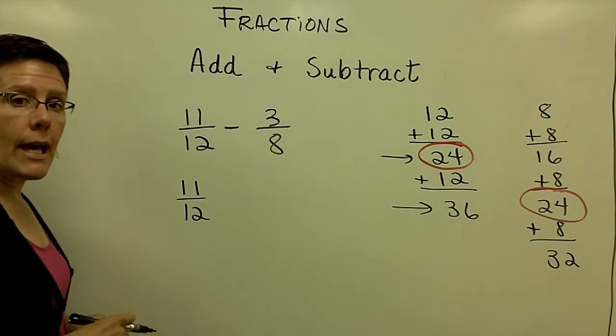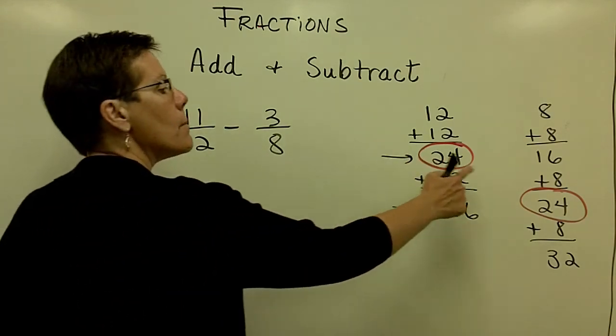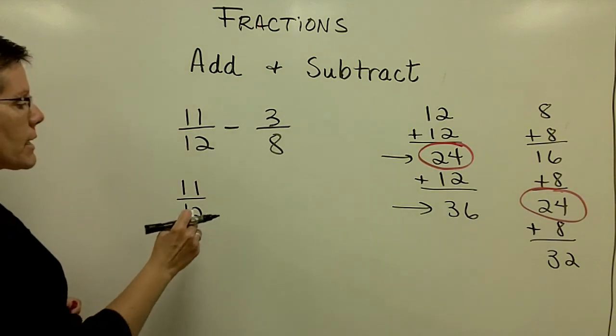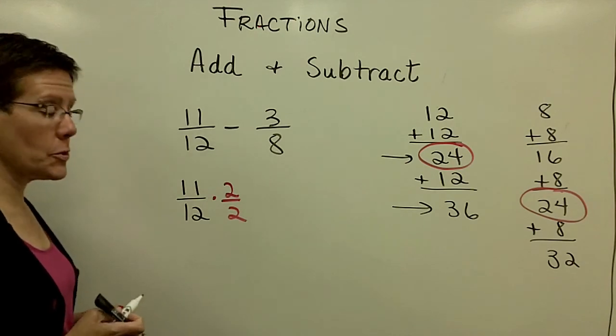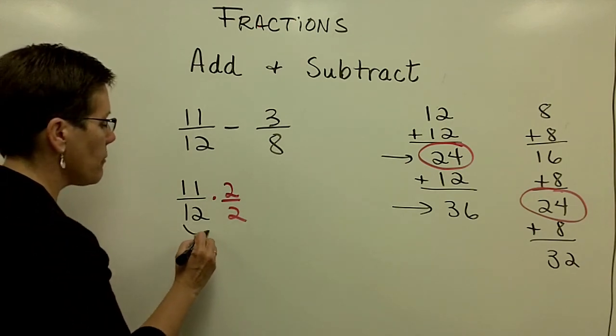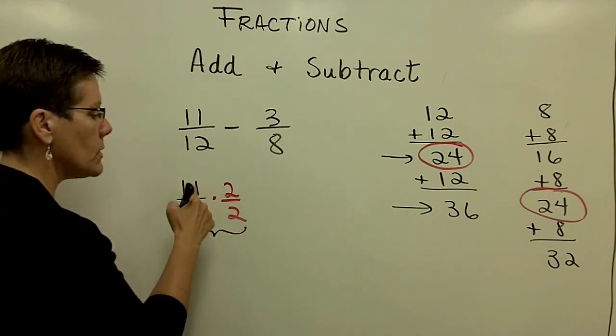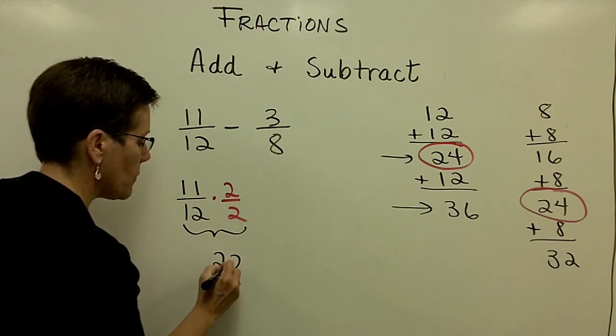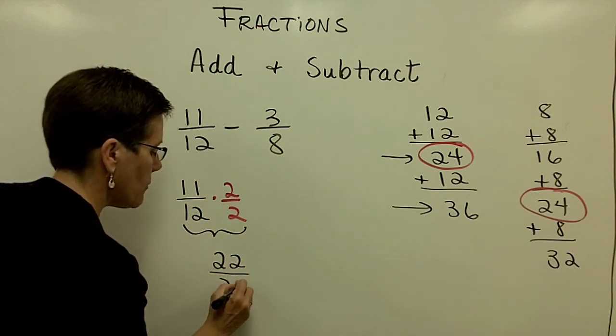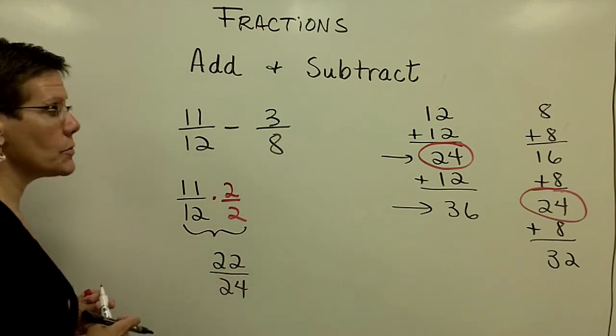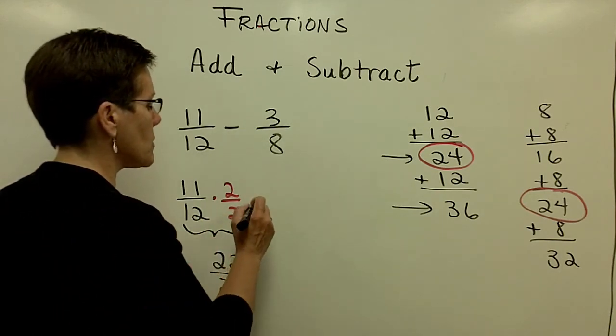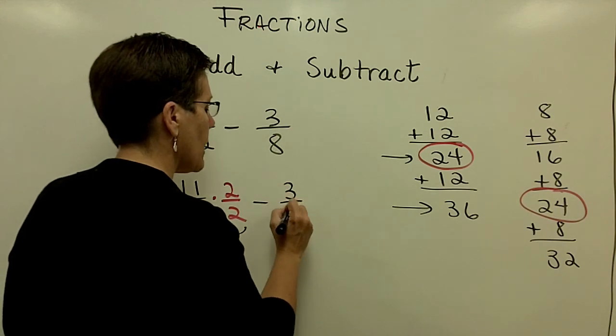I'd like to get that 12 to become a 24. I want it to have that common denominator, so I need to multiply it by the number 1. And that's in the form of 2 over 2. And that fraction will become 22 in the numerator over 24 in the denominator because 12 times 2 is 24. Don't reduce that. You're creating this on purpose.